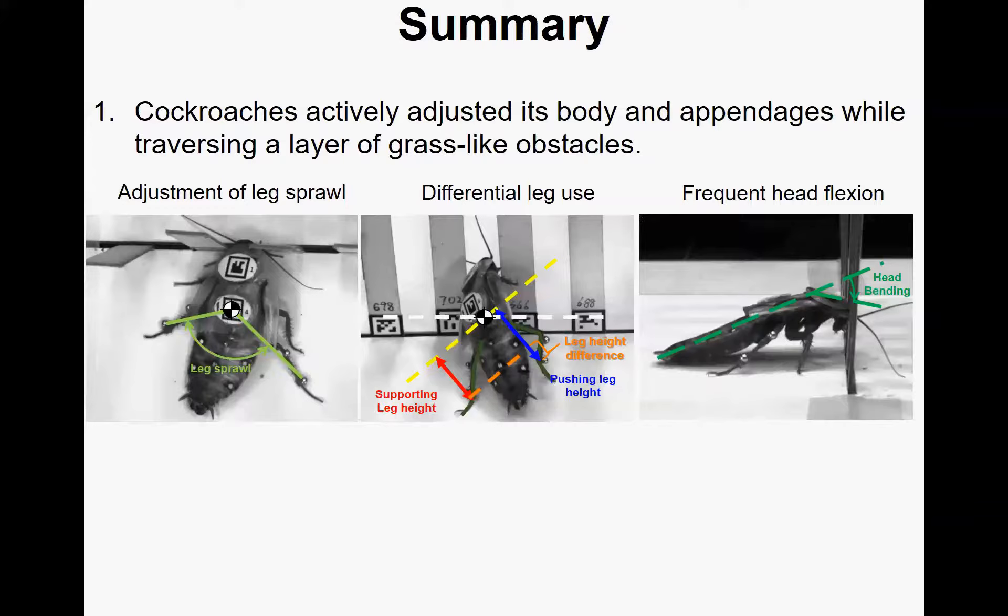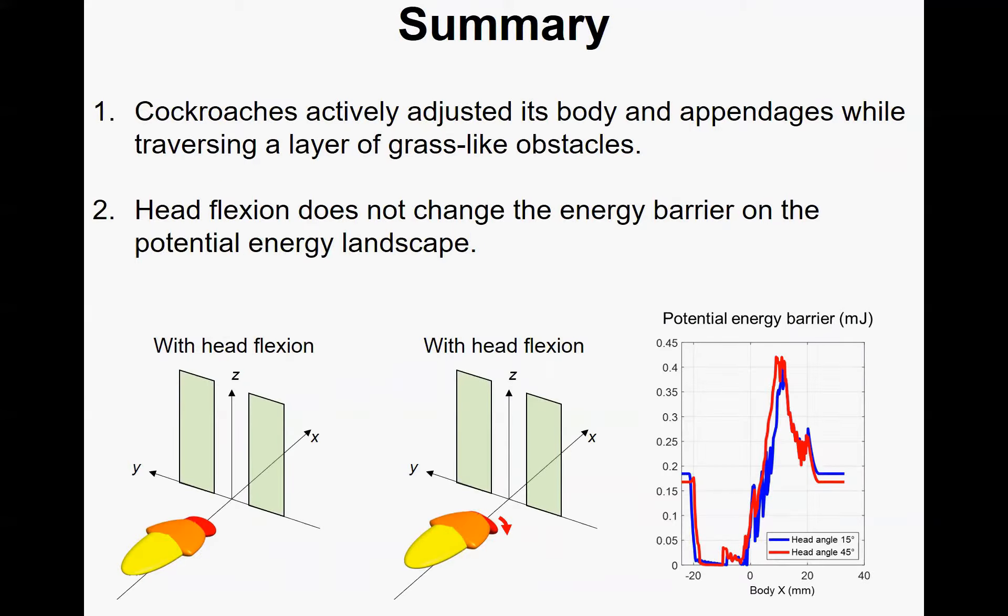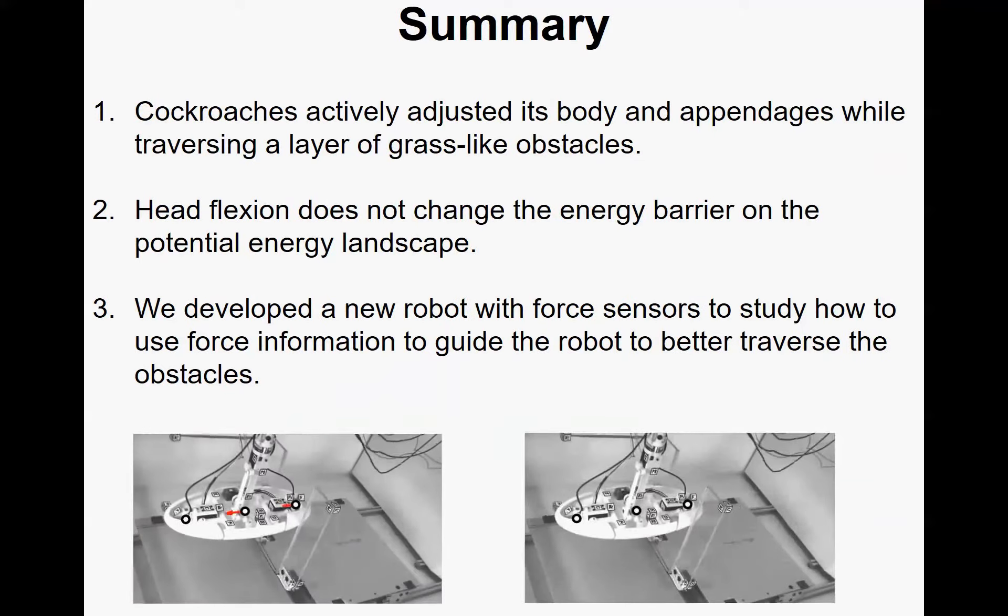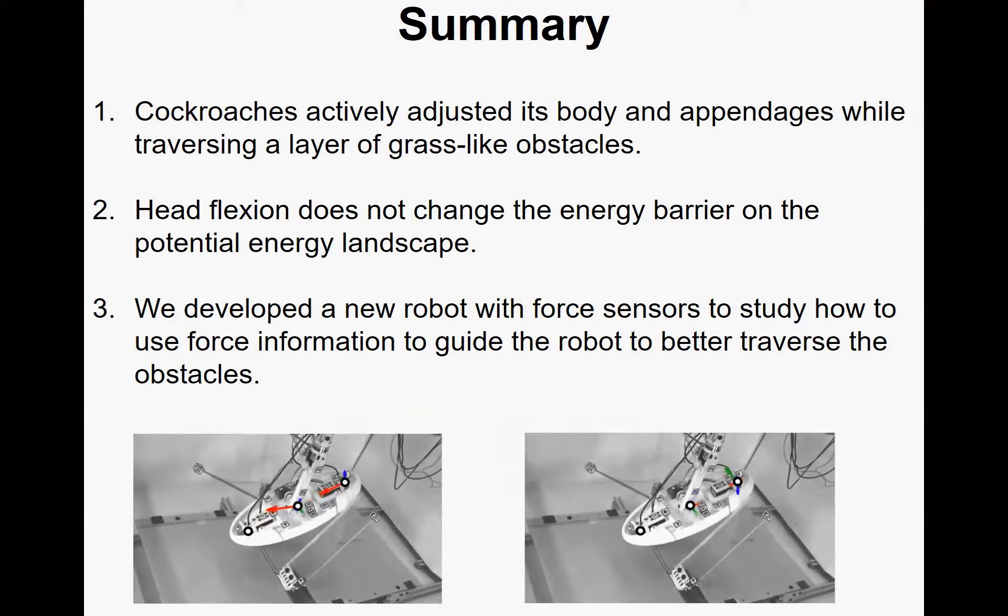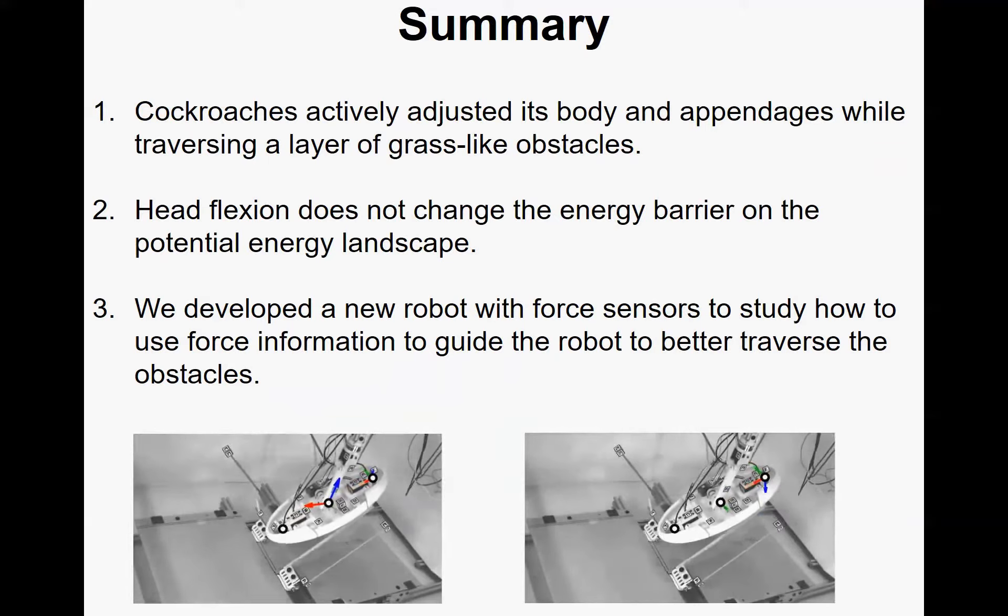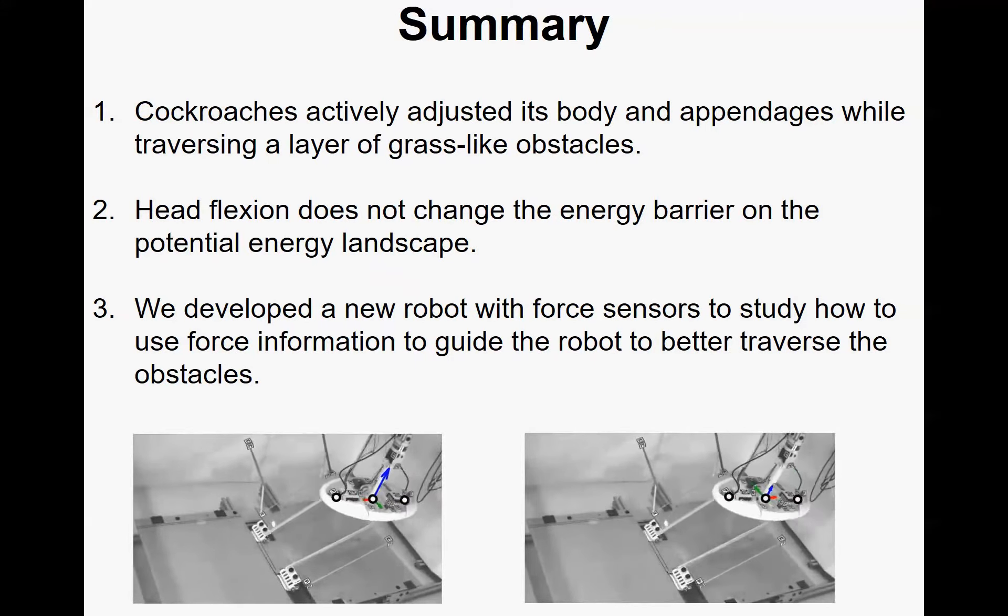To sum up, in our study we first found that a cockroach actively adjusts its body and appendages while traversing a layer of grass-like obstacles in the form of adjusting leg sprawls, differential leg use, and frequent head flexion. Then we further discussed the function of head flexion during traversal. We rejected the hypothesis that head flexion will change the energy barrier on the potential energy landscape using simulation. Then we developed a new robot with force sensors to test how to use force information to guide the robot to better traverse the obstacles.